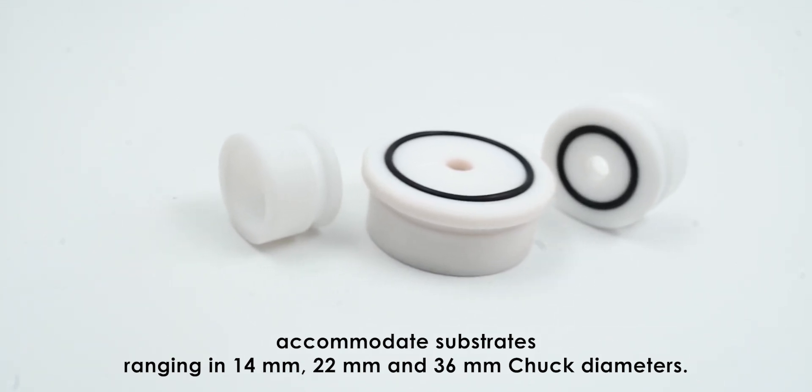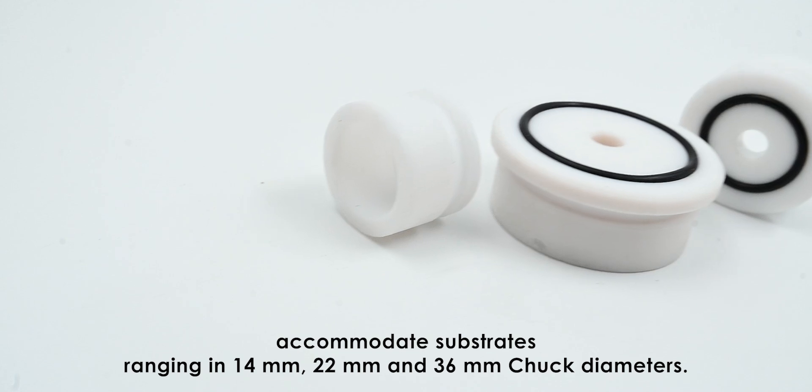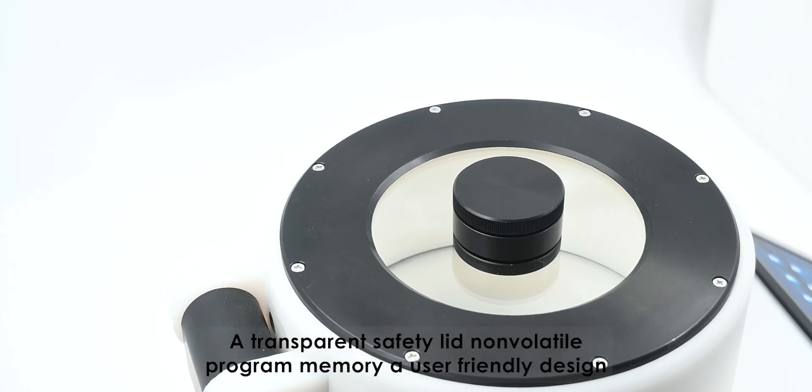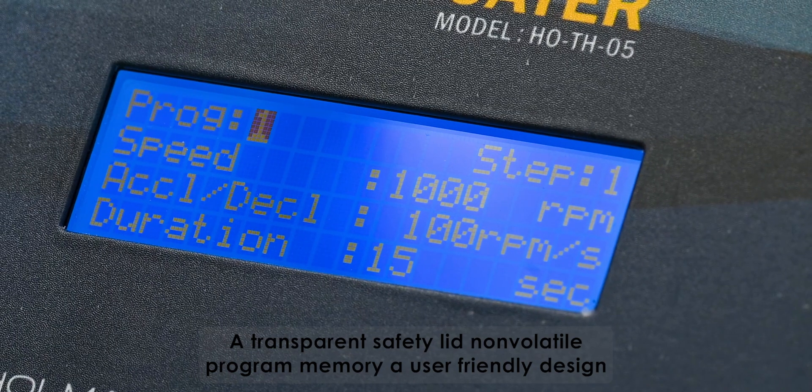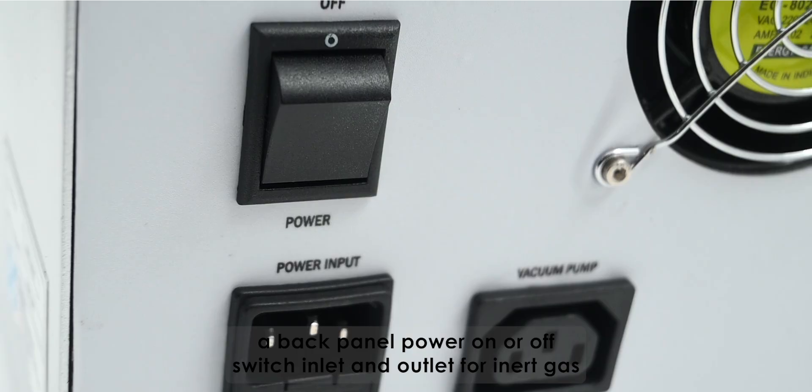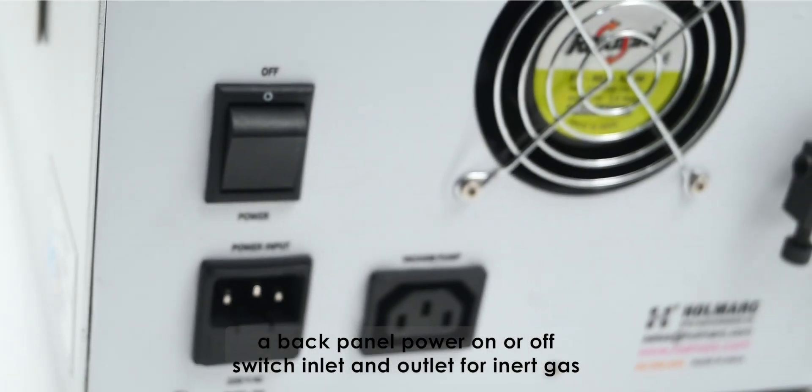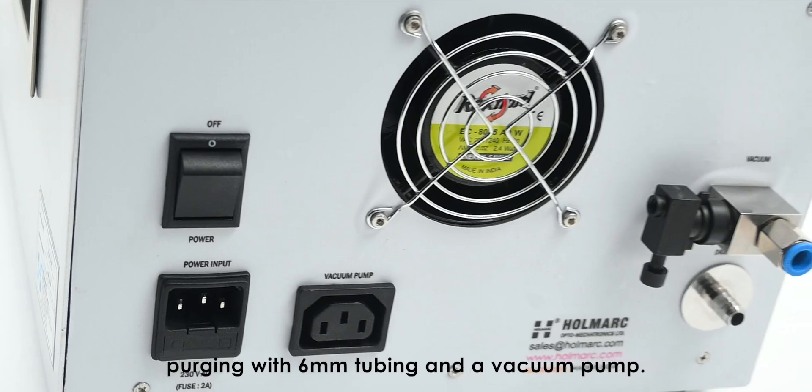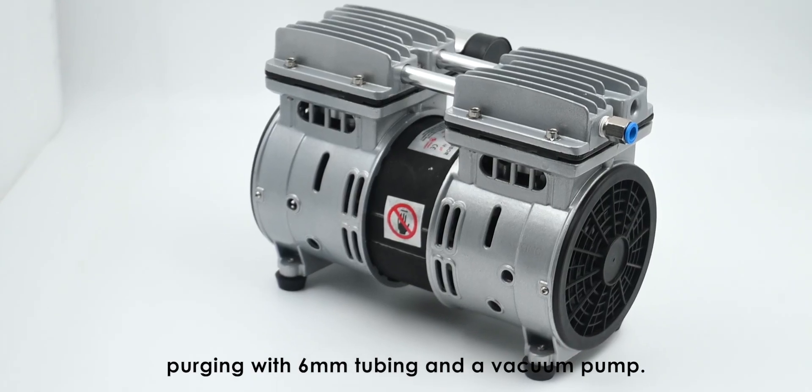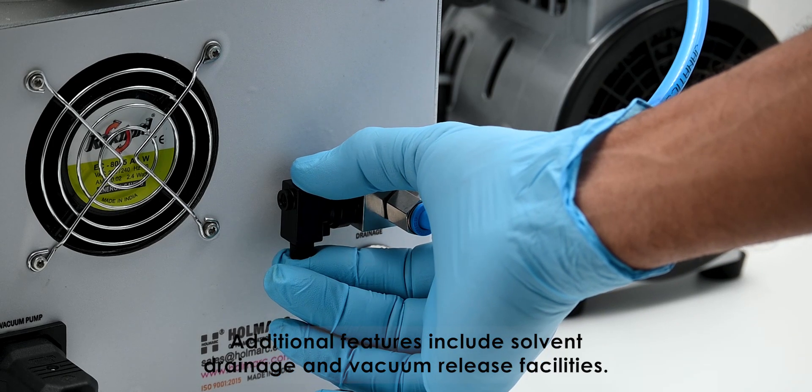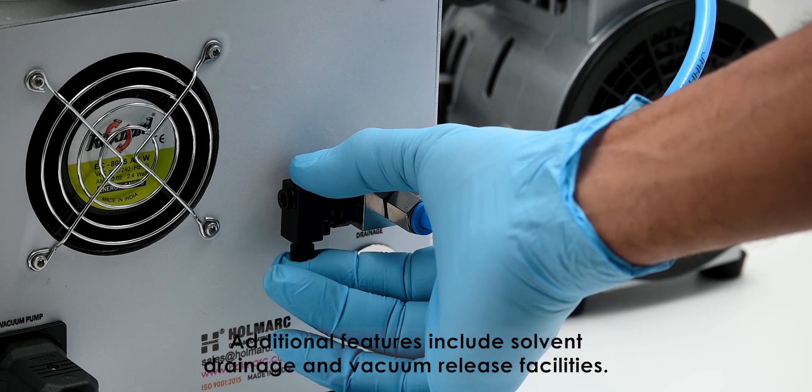Chuck diameters, a transparent safety lid, non-volatile program memory, a user-friendly design, a back panel power on/off switch, inlet and outlet for inert gas purging with six millimeter tubing and a vacuum pump. Additional features include solvent drainage and vacuum release facilities.